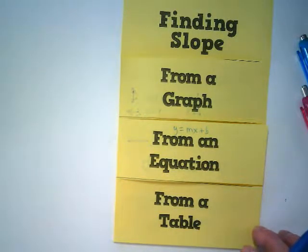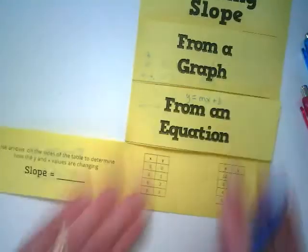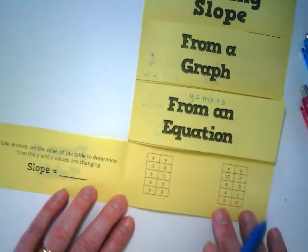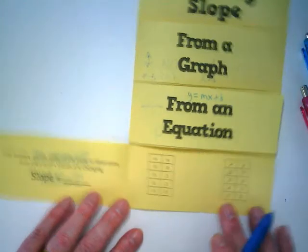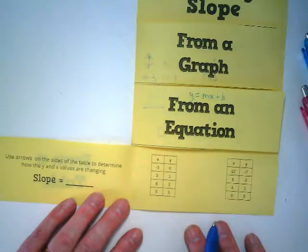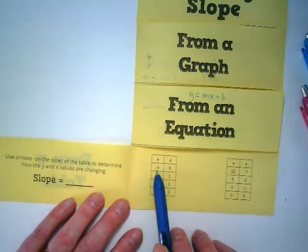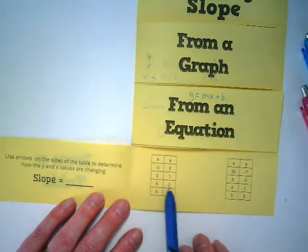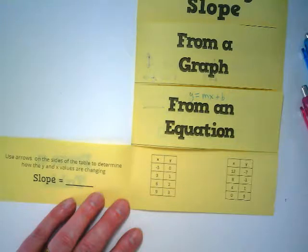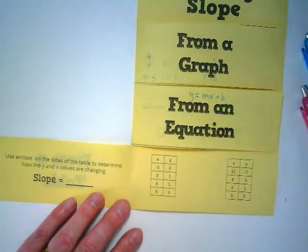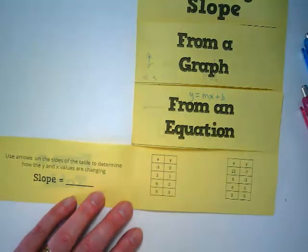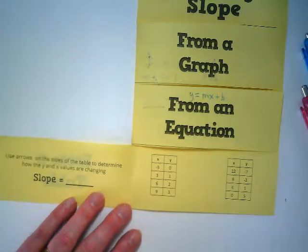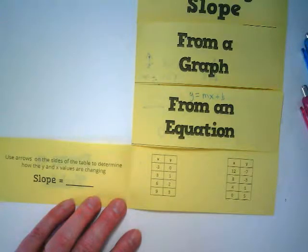And finally, slope from a table. Honestly, there's a couple ways to do this. One, if you have graph paper, these are ordered pairs. I could go and graph negative 3 comma 0, 3 comma 1, 6 comma 2. I could draw the line. I could count my rise over run. I could find it that way, yes? But you don't have to do that. If you have a table, you can take ordered pairs in the table and find the difference between them.